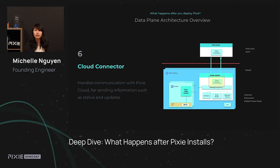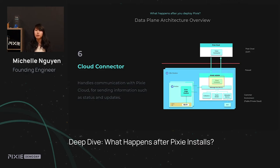And finally, we have the Cloud Connector. The Cloud Connector handles all communication with Pixie Cloud. It might send information to Pixie Cloud, such as the state and how it's currently running on your system. And it can also receive information from Pixie Cloud, such as any updates or configuration changes that should be made to it.